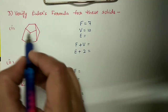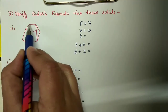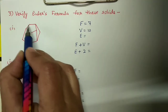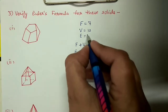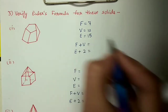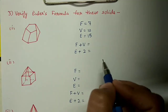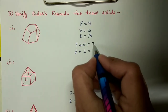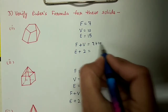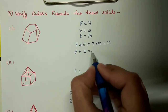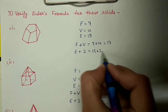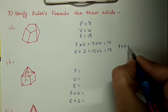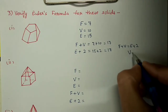Edges: one, two, three, four, five on top; five on base; and five connecting edges - total fifteen edges. Now substituting values: F plus V equals 7 plus 10 equals 17, and E plus 2 equals 15 plus 2 equals 17. So it is coming the same - Euler's formula F plus V equals E plus 2 is verified.